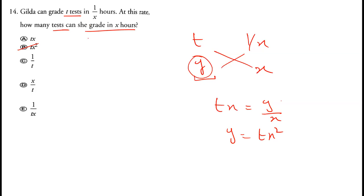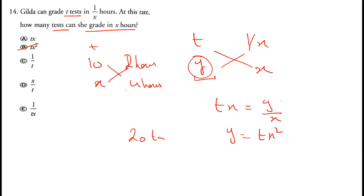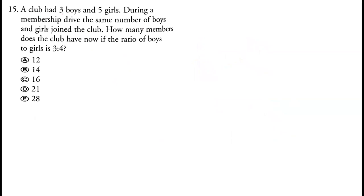For example, if you can check 10 tests in two hours, in four hours you can check 20 tests. Cross-multiplying: 10 times 4 divided by 2 equals 20. This confirms the cross-multiplication logic used in the previous problem.